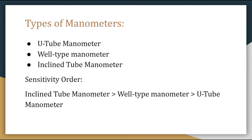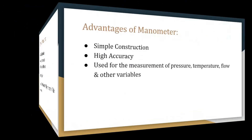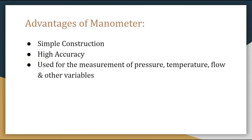Moving forward, the types of manometers we have are: U-tube manometer, well type manometer, and inclined tube manometer. The sensitivity order is: inclined tube manometer has the highest sensitivity, then well type manometer, and U-tube manometer has the lowest sensitivity among these three. The advantages of a manometer are: it is simple in construction, gives high accuracy, and along with pressure it is used for measurement of temperature, flow, and other variables as well.